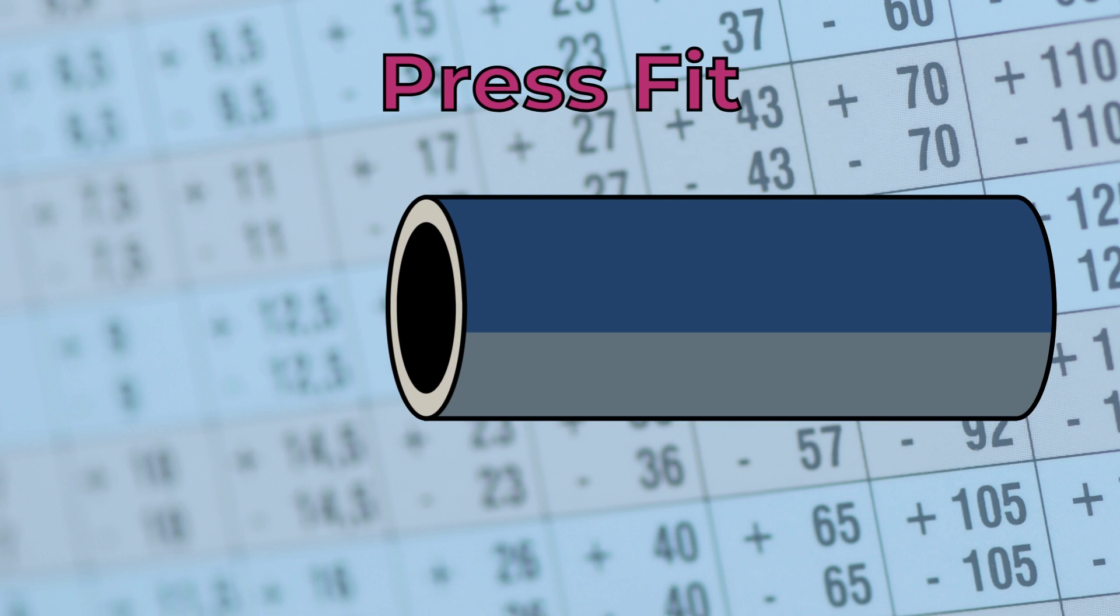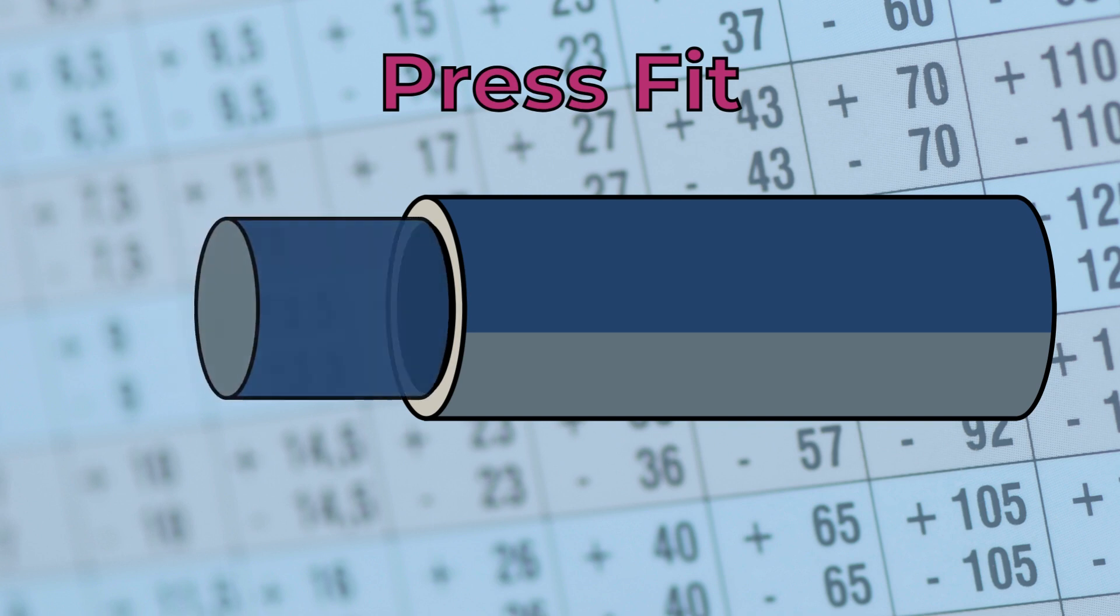A press or interference fit is a type of fit in which the shaft is larger than the hole before assembly, creating a tight and secure connection between the two parts.